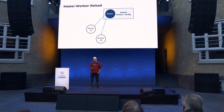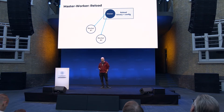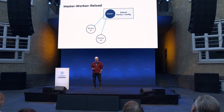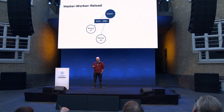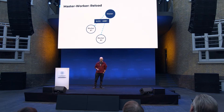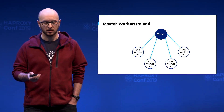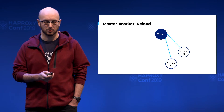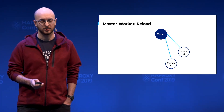Once you send this signal, the master will reload itself. We still need the ability to update the binary, so it will re-execute itself — it will load the new binary and then load the new configuration. After that, all is the same as the daemon mode: it will send the soft stop signal, it will fork, and then the previous processes will disappear once they finish their job.